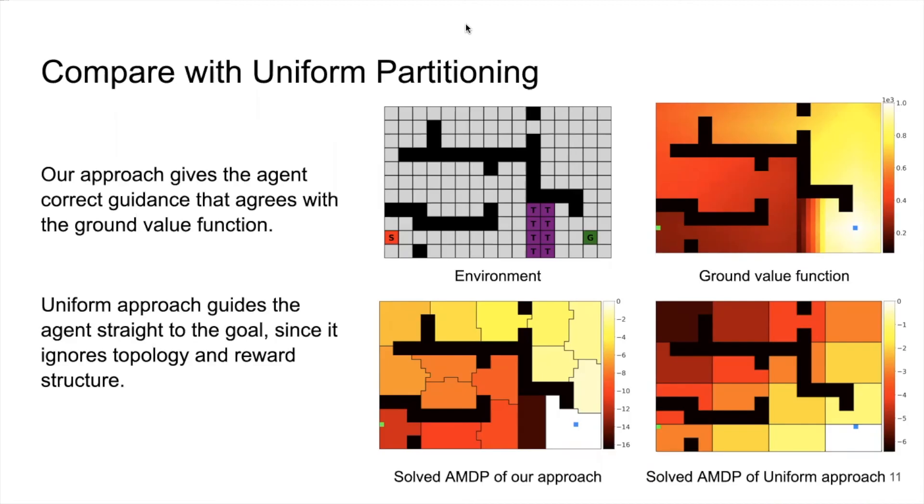Now, let's compare our approach with uniform approach. Additionally, we also solved the ground level MDP to get the optimal policy. As you can see in the image at the top right, our approach can preserve both topological and reward structure of the environment into the AMDP so that it can keep giving the agent correct guidance that agrees with the ground value function. In comparison, uniform approach guides the agent straight to the goal state, which looks correct on the abstract level but actually causes huge negative reward crossing the traps.